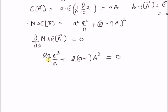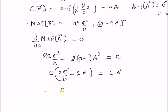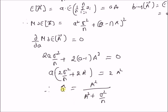By grouping the a terms, we have a × [2σ²/n + 2a²] = 2a². Therefore, the estimator that minimizes MSE(ã) is â = a² / (a² + σ²/n), after cancelling the 2 on both sides. So the estimator of a is the ratio of a² to a² plus σ²/n, where σ²/n is the variance of the sample mean.